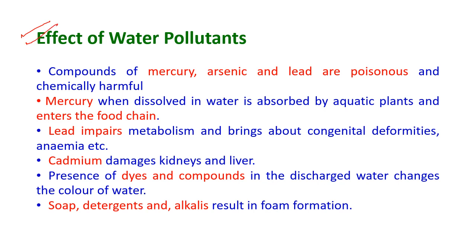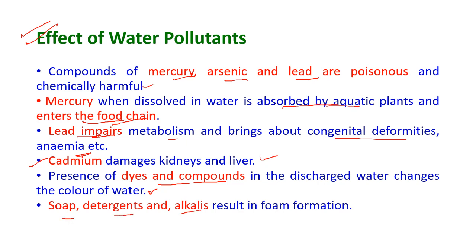The effects of water pollutants: compounds of mercury, arsenic and lead are poisonous and chemically harmful. Mercury, when dissolved in water, is absorbed by aquatic plants and enters the food chain. Lead impairs metabolism and brings about congenital deformities and anemia. Cadmium damages the kidneys and liver. The presence of dyes and compounds in discharged water changes the color of the water, and detergents and alkalis result in the formation of foam.